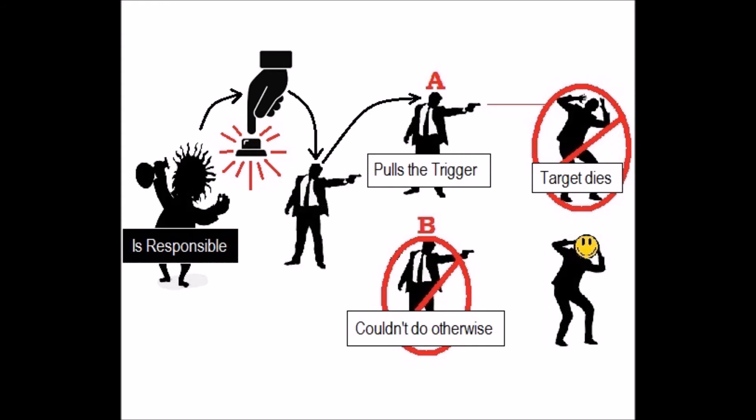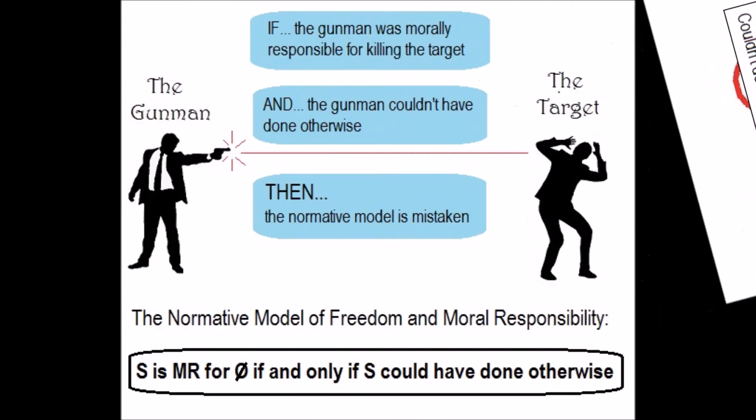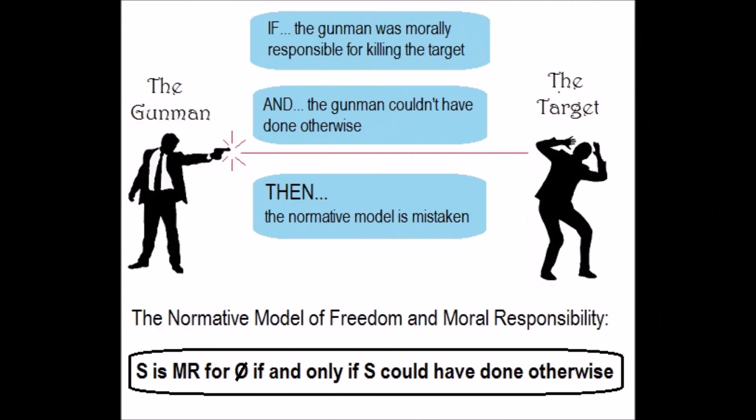This therefore makes the evil neuroscientist morally responsible for the death of the target. And recall, Frankfurt's goal is to show that the normative model is mistaken by explaining how someone could be morally responsible but couldn't have done otherwise. Expressed otherwise, if it's possible to be morally responsible even if you couldn't have done otherwise, then the normative model is mistaken.